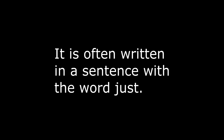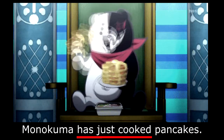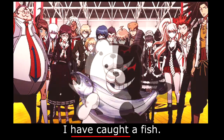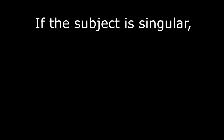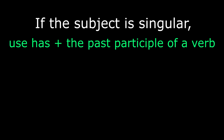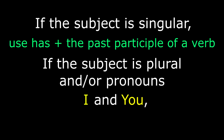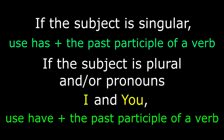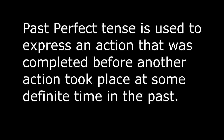Present perfect tense also expresses a very recently completed action. It is often written in a sentence with the word 'just.' Example: Monokuma has just cooked pancakes. I have caught a fish. Take note that if the subject is singular, use 'has' plus the past participle of a verb. If the subject is plural and/or pronouns 'I' and 'you,' use 'have' plus the past participle of a verb.